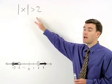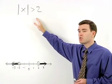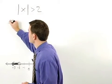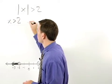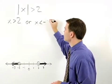So if we're given this absolute value inequality, we can split things up into two separate inequalities. Either x is greater than 2 or x is less than negative 2.